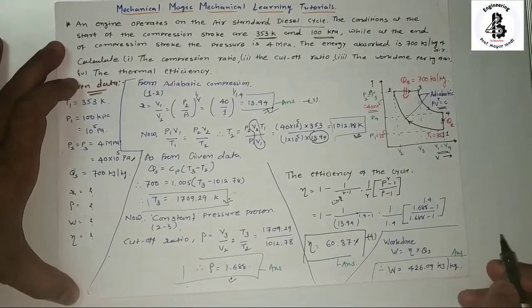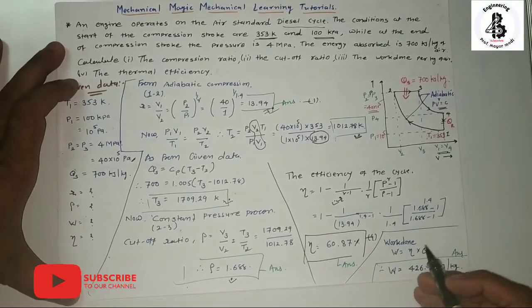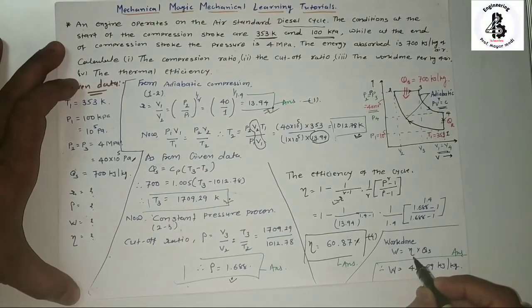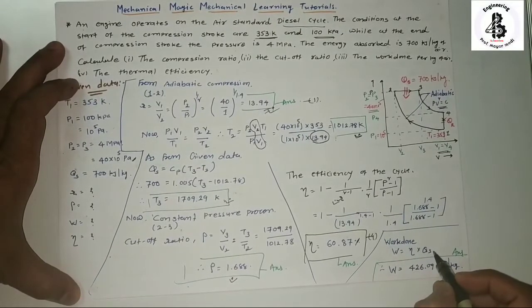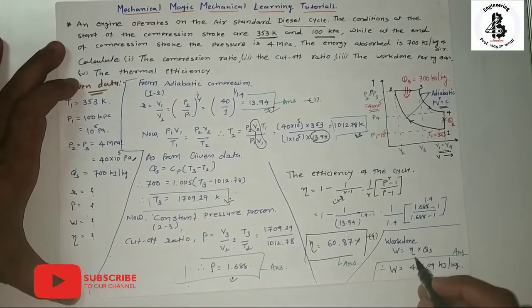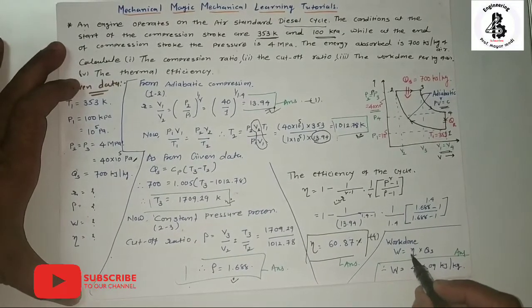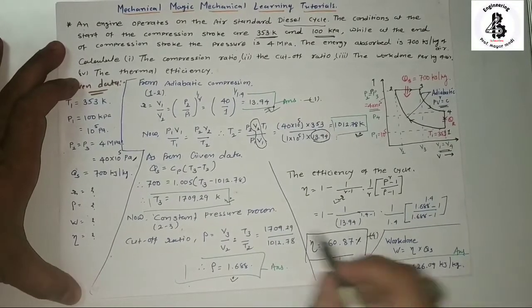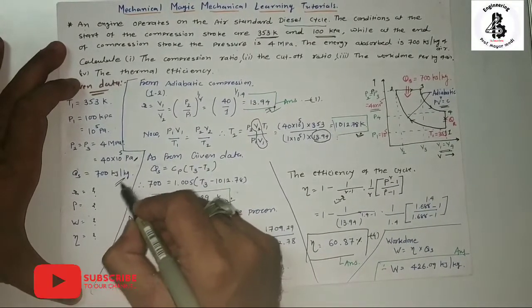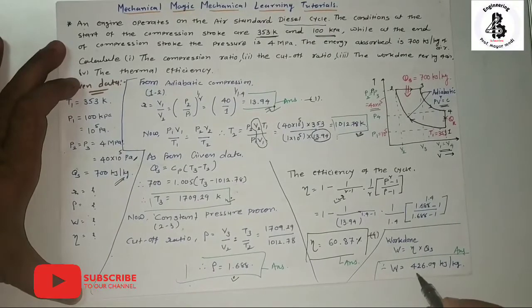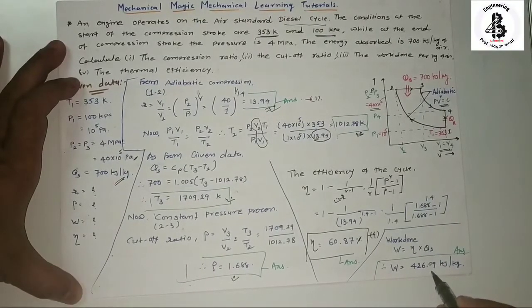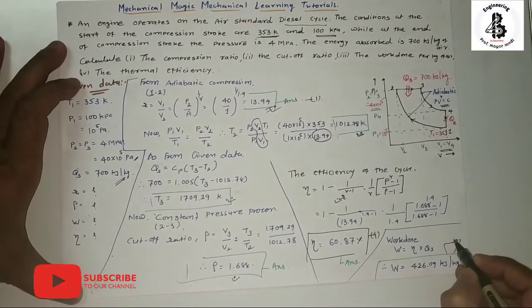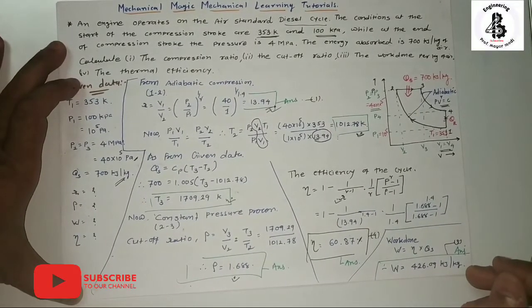Work done per kg of air = efficiency × heat supply = 0.6087 × 700 = 426.09 kJ/kg. That is answer number 3.